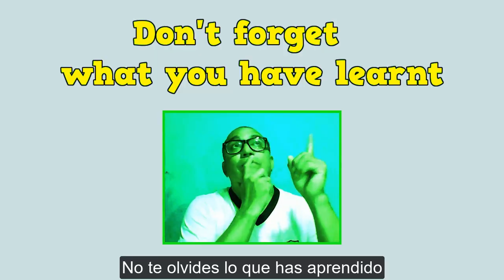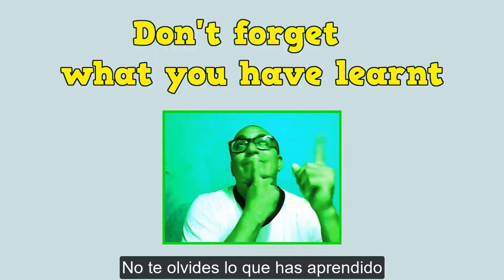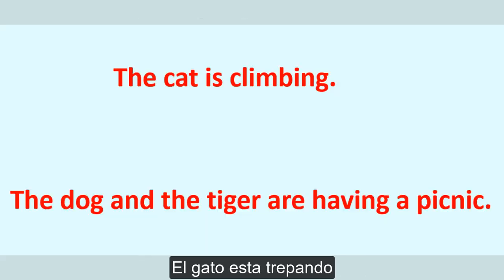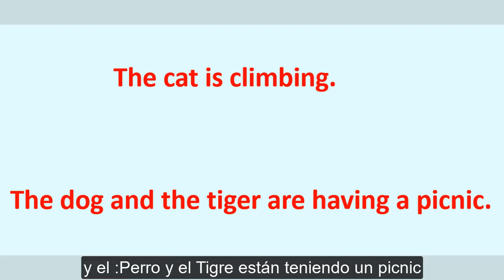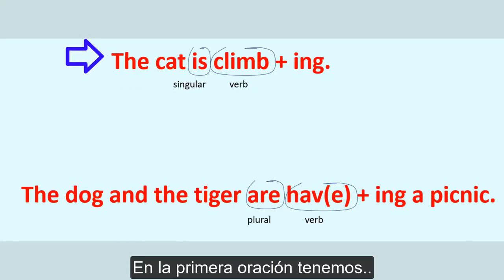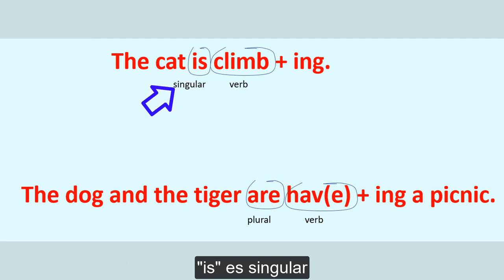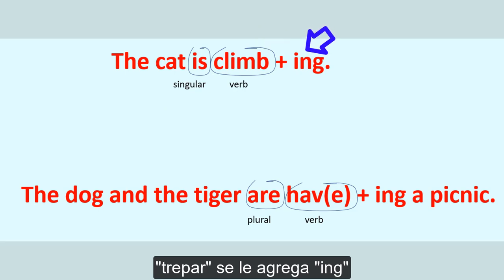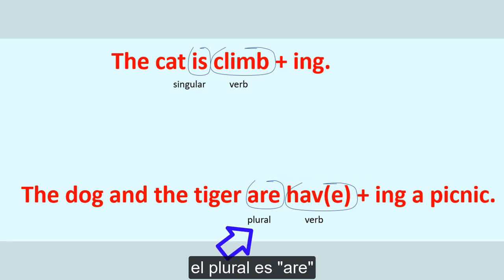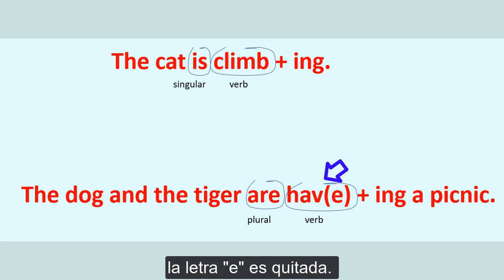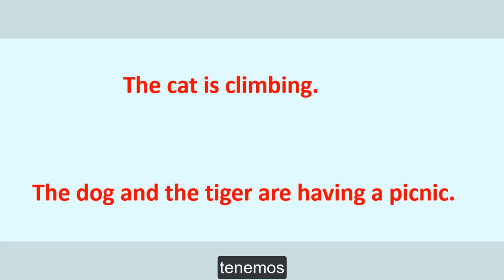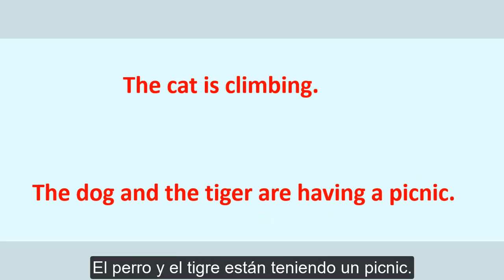Congratulations! Let's look at these two sentences: 'The cat is climbing' and 'The dog and the tiger are having a picnic.' In the first sentence, we have a singular subject, so we use 'is,' and the verb 'climb' has 'ing' added. In the second sentence, with a plural subject, we use 'are,' and the verb 'have' has the letter 'e' taken out and 'ing' added.